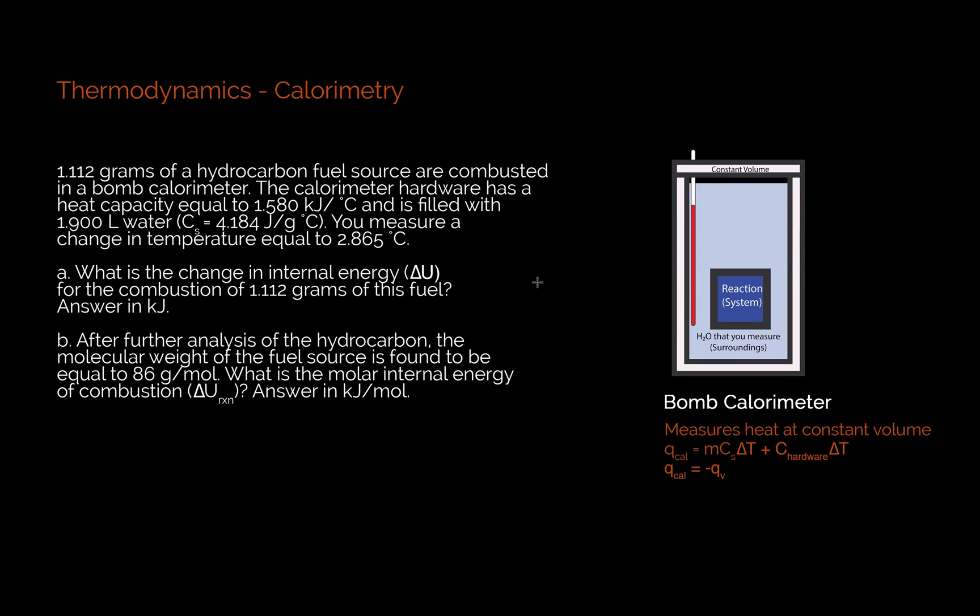1.112 grams of a hydrocarbon fuel source are combusted in a bomb calorimeter. The calorimeter hardware has a heat capacity equal to 1.580 kilojoules per degree Celsius and is filled with 1.900 liters of water which has a specific heat capacity equal to 4.184 joules per gram degrees Celsius. You measure a change in temperature equal to 2.865 degrees Celsius.